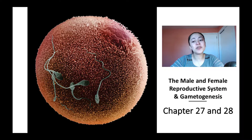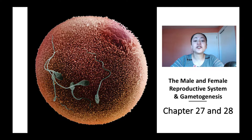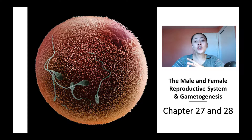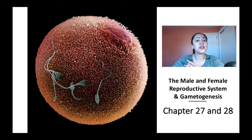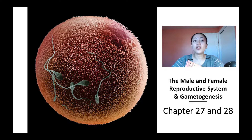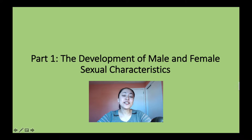Hello, welcome to Biology with Risa. In this lecture series we will be looking at the male and female reproductive system. I am going to divide this lecture series into five videos. Part one will look at the development of male and female sexual characteristics. Part two will look at male and female reproductive anatomy. Part three will look at gametogenesis, or the formation of sperm and eggs. Part four will look at the hormones involved in the female reproductive cycle, and in part five we'll briefly talk about infertility and contraceptives.